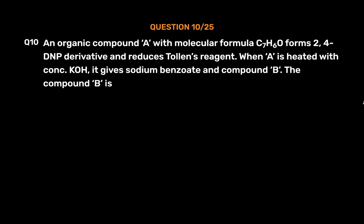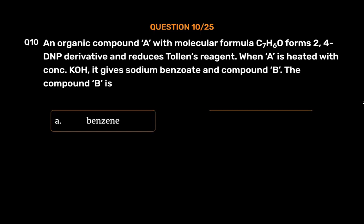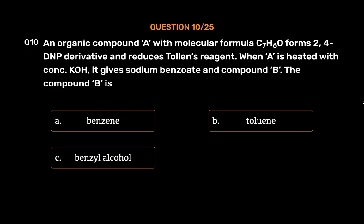Question number 10. An organic compound A with molecular formula C7H6O forms a 2,4-DNP derivative and reduces Tollens' reagent. When A is heated with conc. NaOH, it gives sodium benzoate and compound B. The compound B is: Option A, benzene; Option B, toluene; Option C, benzyl alcohol; Option D, benzaldehyde. The correct answer is Option C, benzyl alcohol.